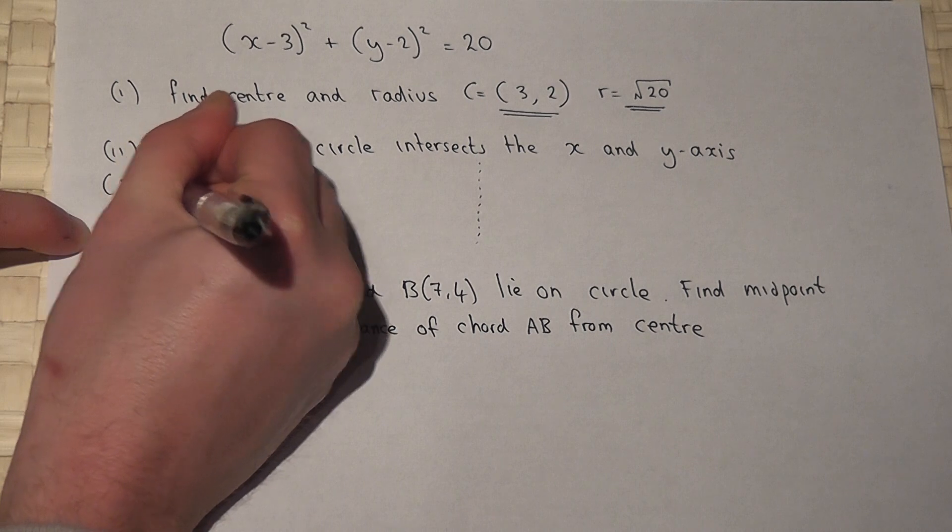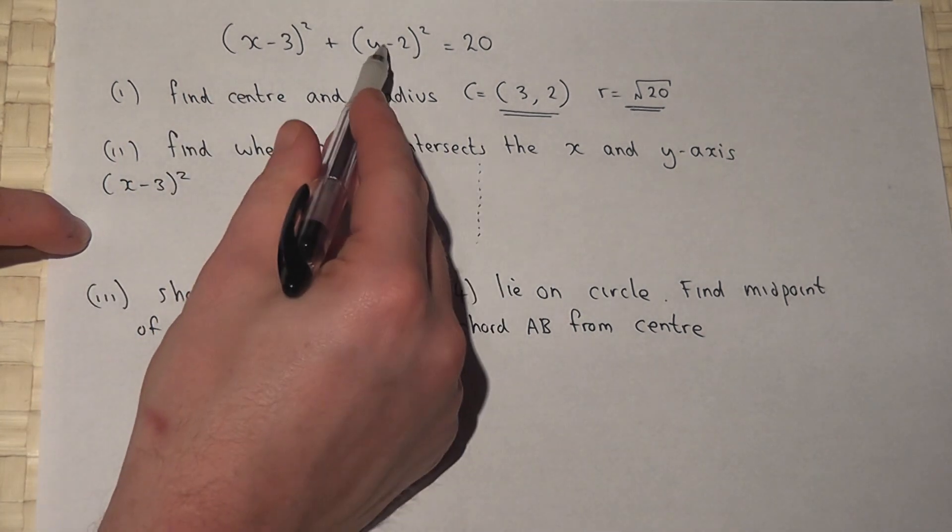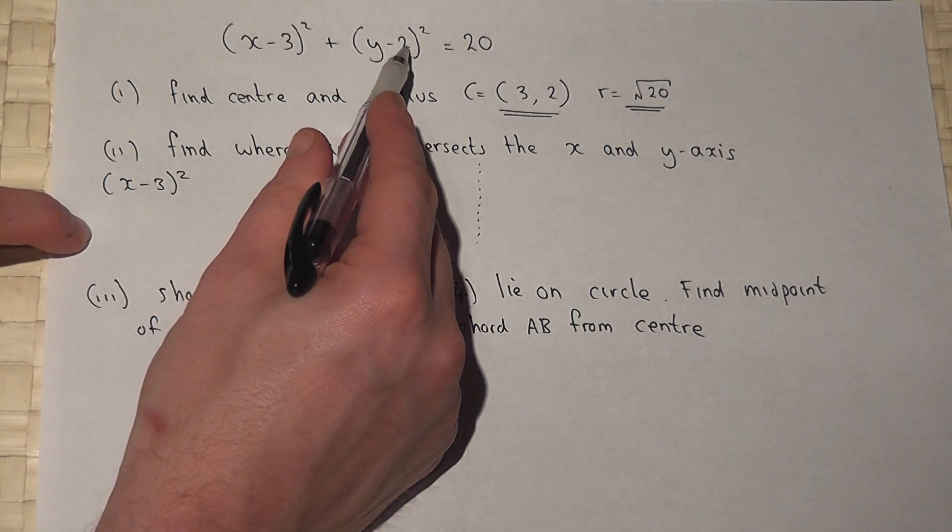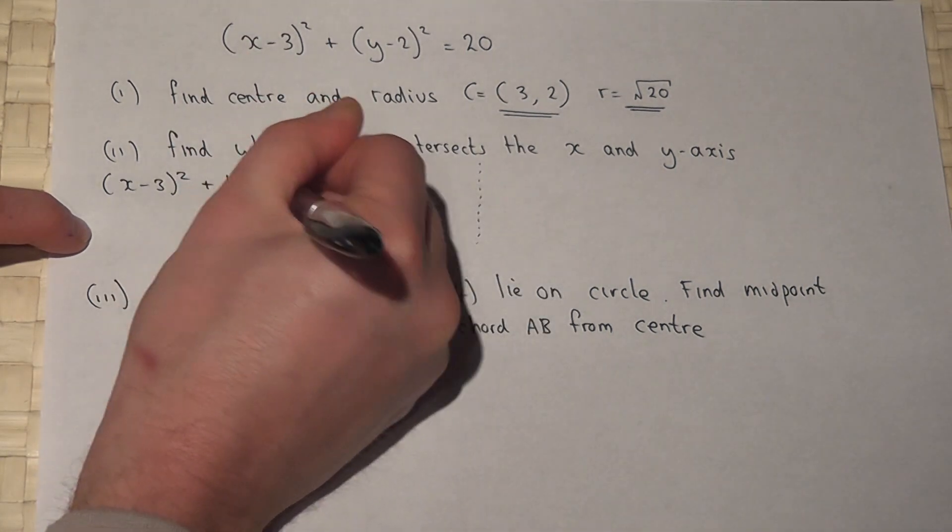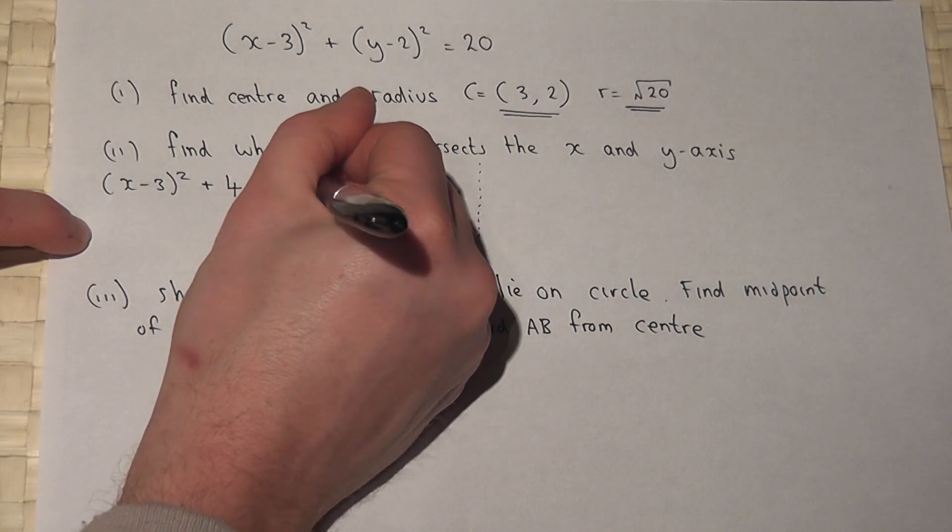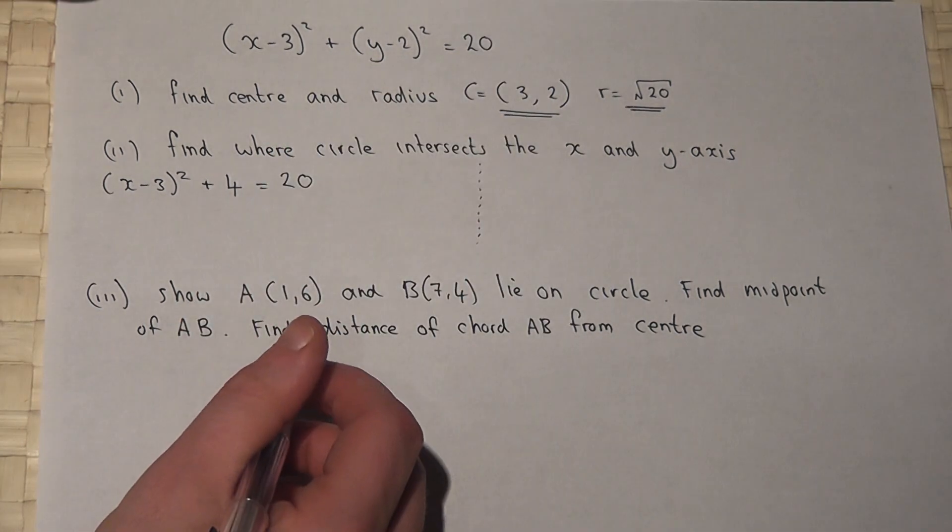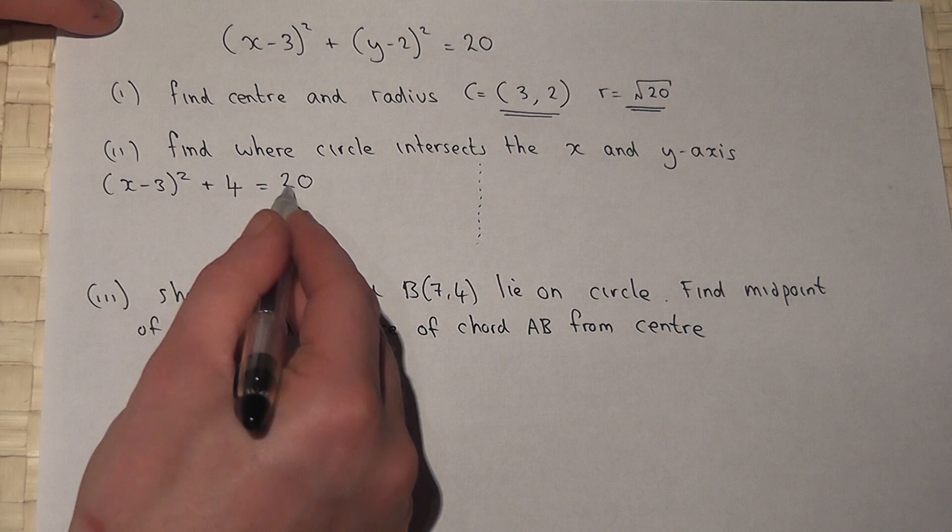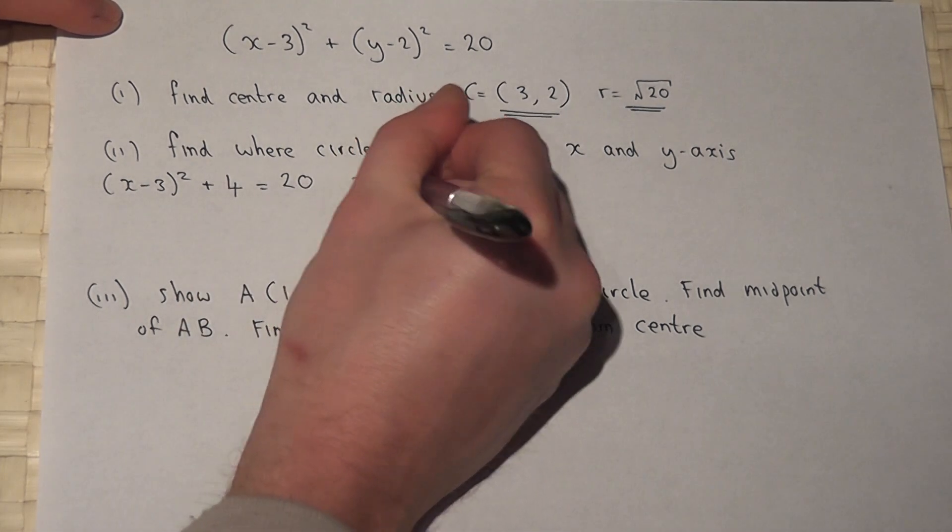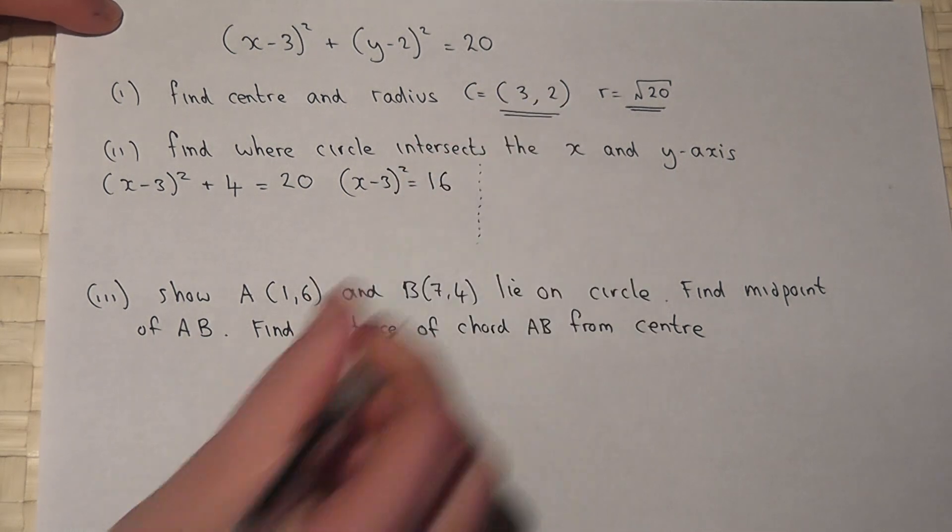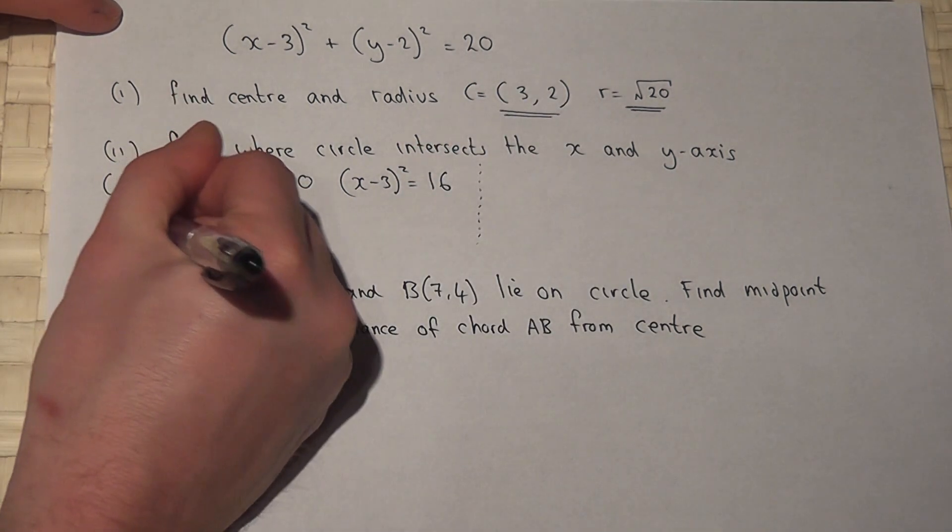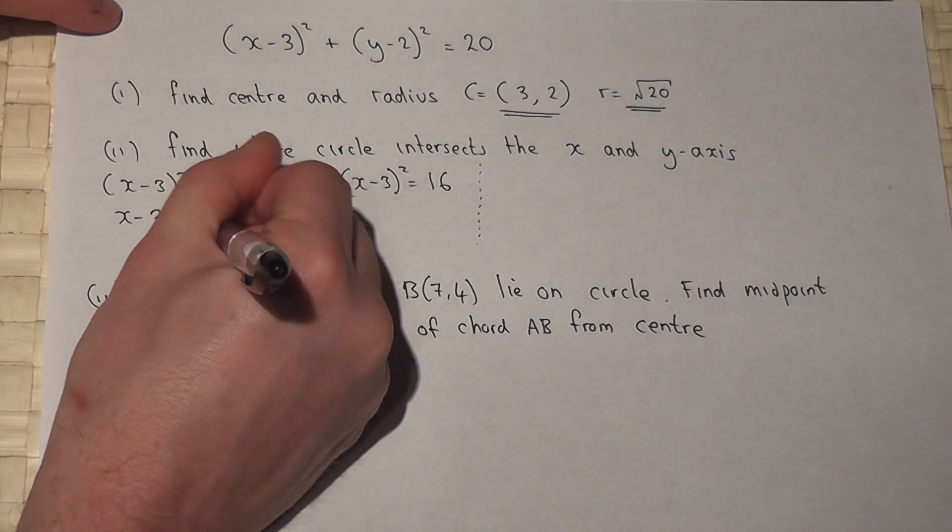(x-3)². Now y is 0, so we get -2, and -2 squared is 4. So we get +4, and that must equal 20. I can then take away 4, so (x-3)² equals 16. I can then square root, so x-3 equals +4.